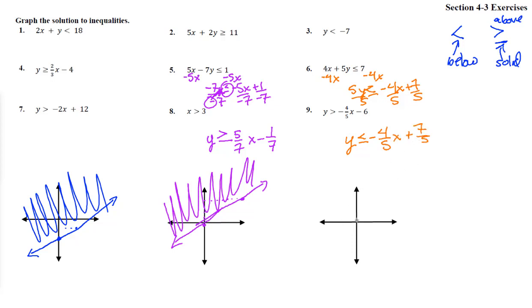So we start at 0, 7 fifths as our initial point. That's a nice easy one. And then down 4, so 1, 2, 3, 4, over 1, 2, 3, 4, 5.